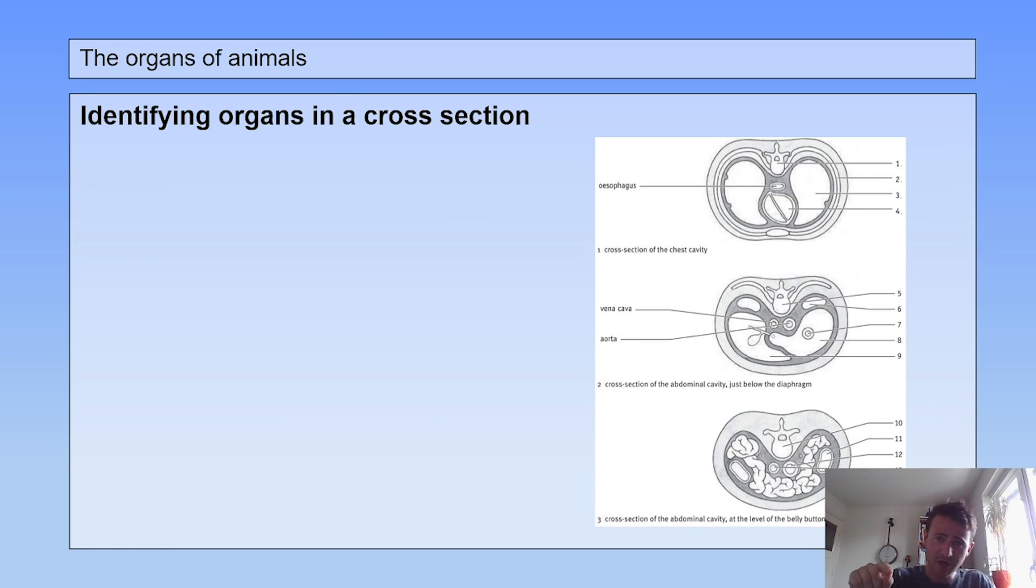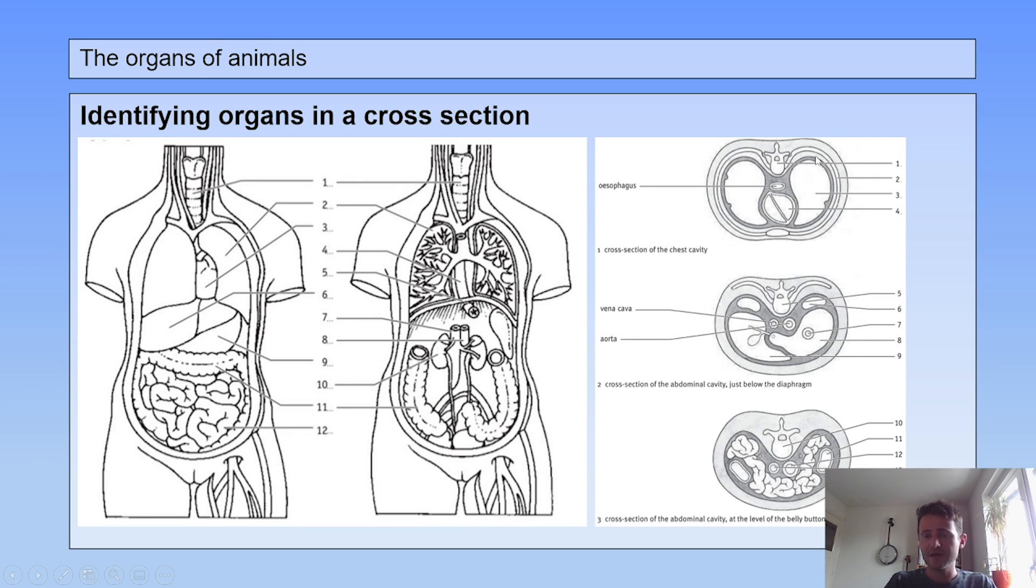The organs you just saw were organs in an image with a longitudinal section, but you have to be able to recognize the organs in a cross section. Here you see three cross sections of the torso. This one is the cross section of the chest cavity. This is a cross section of the abdominal cavity just below the diaphragm. And number three is a cross section of the abdominal cavity at the level of the belly button. You have to be able to recognize these organs in a cross section.